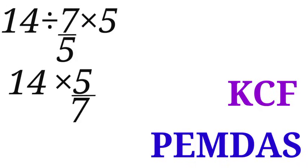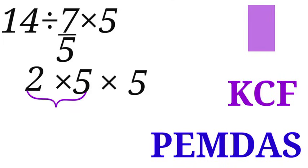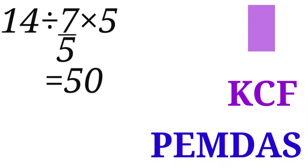So our new expression is now 14 times 5 over 7 times 5. Here, 7 divided by 7 is 1, and 14 divided by 7 is 2. So we have another expression now, 2 times 5 times 5. 2 times 5 is 10. 10 times 5 is 50. 50 is our final answer.